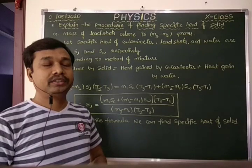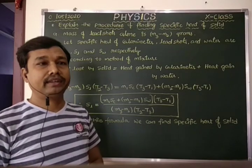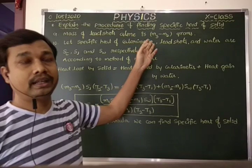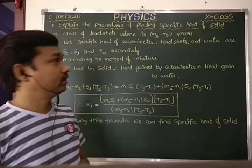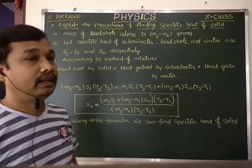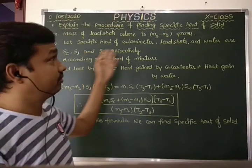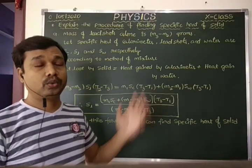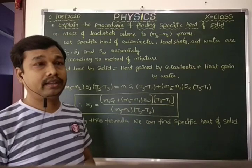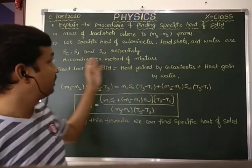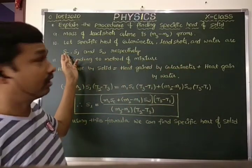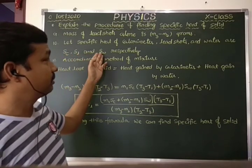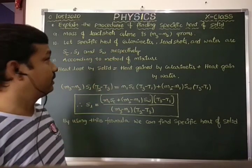The mass of the lead shots alone can be found using the formula M3 minus M2 grams. We define the specific heat of the calorimeter as SC, the specific heat of the lead shots as SL, and the specific heat of water as SW.